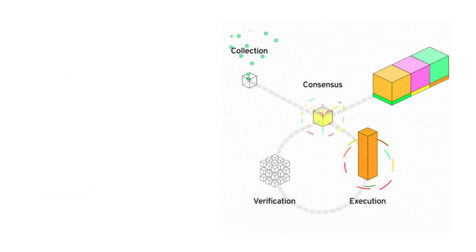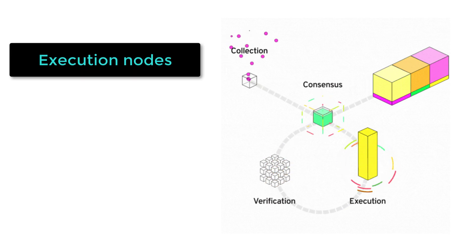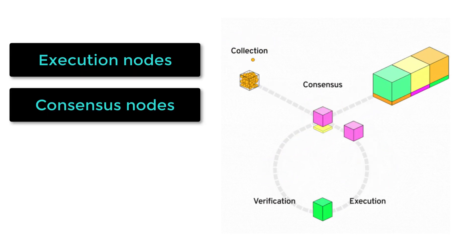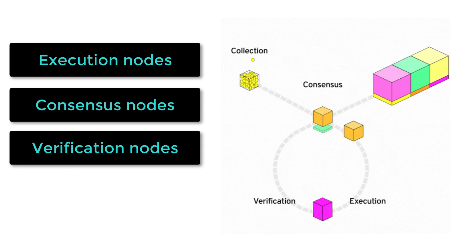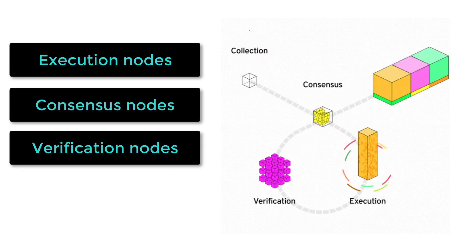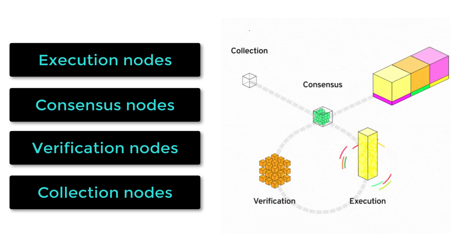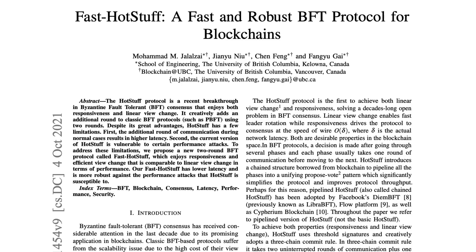With Flow, there are different nodes with different responsibilities. Execution nodes perform the computation associated with each transaction. Consensus nodes order transactions on the blockchain. Verification nodes check the validity of transactions. And collection nodes enhance network connectivity and data availability for dApps. To keep the blockchain synchronized, Flow uses its own proof-of-stake consensus algorithm called HotStuff.